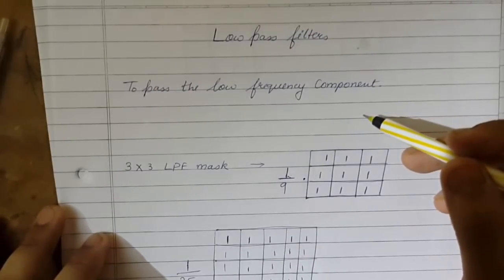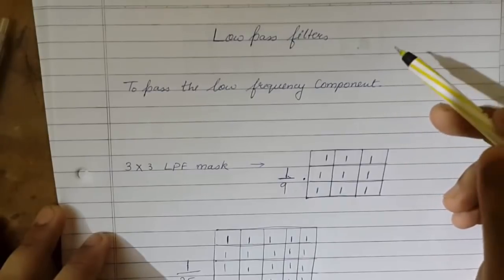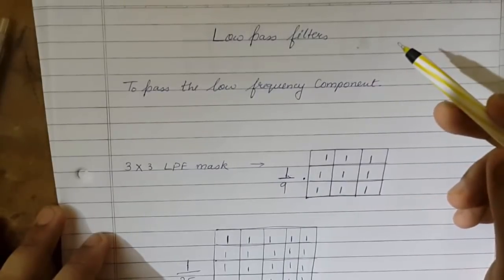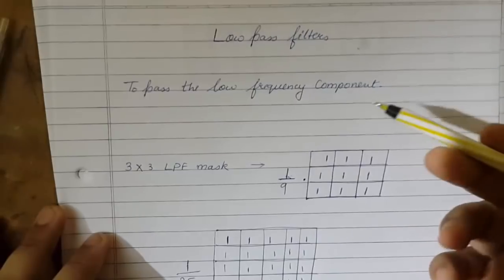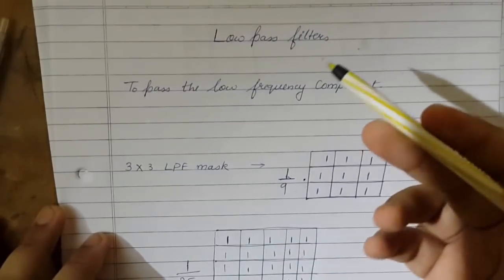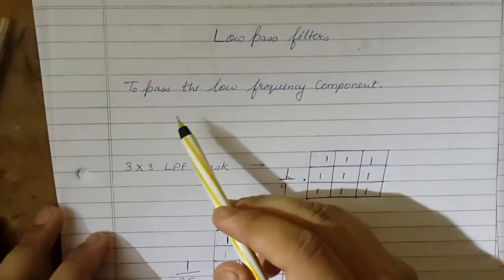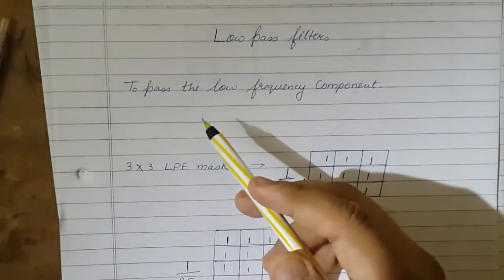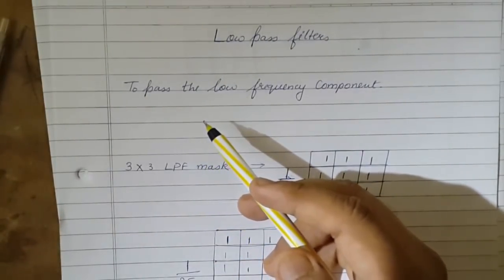Now as I said, neighborhood processing forms the base for filtering purposes. So in this tutorial we will be seeing low-pass filters. Now the function, as we know, of a low-pass filter is to pass or to allow low frequency components in the output and to debar or to disallow the high frequency components from appearing in the output.